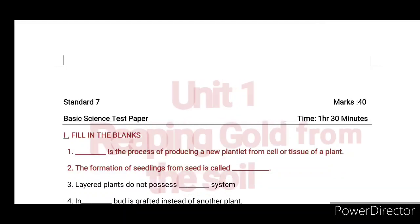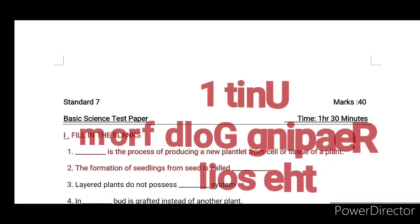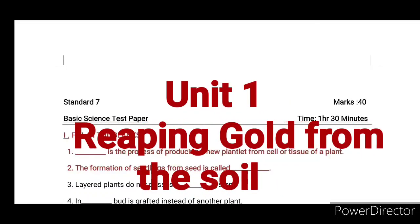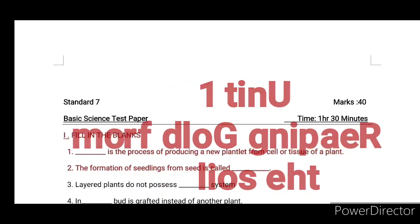Hello friends, welcome to the class. We are going to go through basic science test paper questions. This is the chapter, Unit 1: Ripping Gold from the Soil.